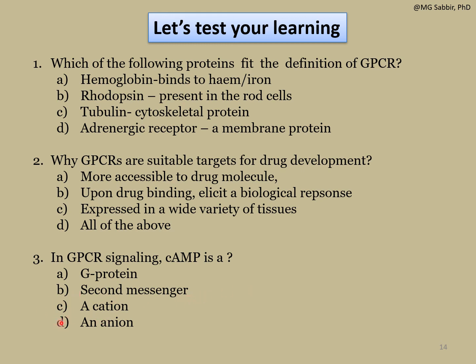Question three: in GPCR signaling, cyclic AMP is — option A: a G protein; option B: a second messenger; option C: a cation; option D: an anion. Cyclic AMP is not a G protein, nor a cation, nor an anion — it is an adenosine monophosphate molecule. The correct answer is option B: second messenger. The next lecture will discuss GPCR signal transduction focusing on intracellular calcium release responses, receptor internalization, and receptor desensitization.